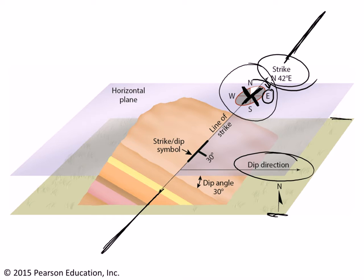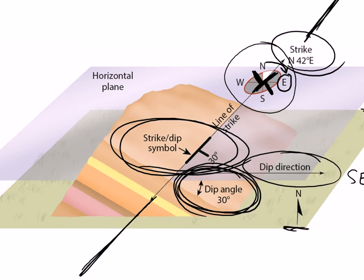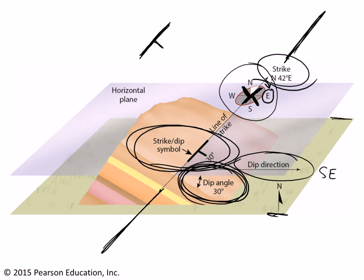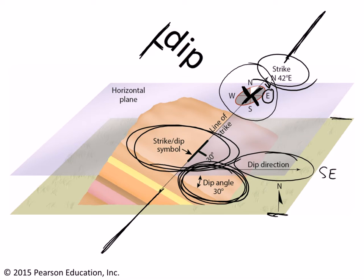That's the dip direction toward the southeast portion of the compass. There's also the question of how steeply this rock layer is dipping, measured from horizontal. If it's horizontal, this number is zero. In this case, the dip angle is 30 degrees. Dip can vary between zero (horizontal) at a minimum and 90 (vertical) at a maximum. The strike and dip symbol is basically drawn like a letter T, where the long part is the strike direction and the short little bar represents the dip direction, with the dip angle written in degrees.